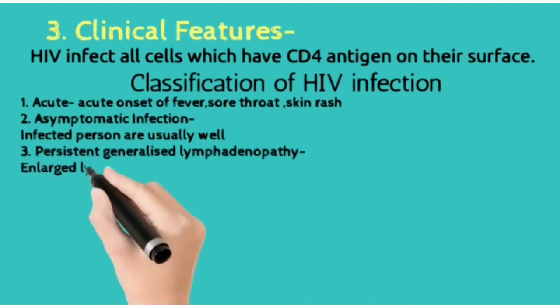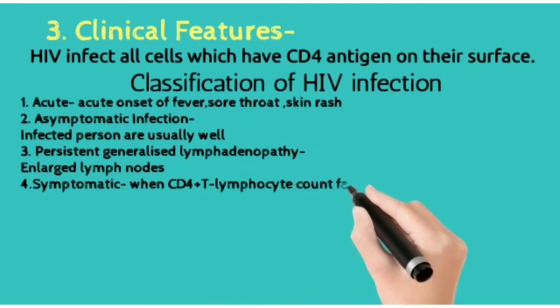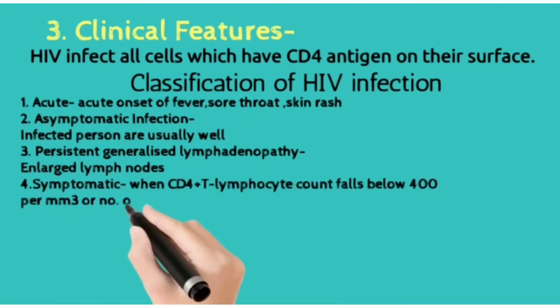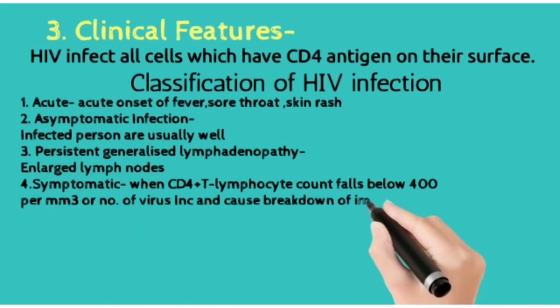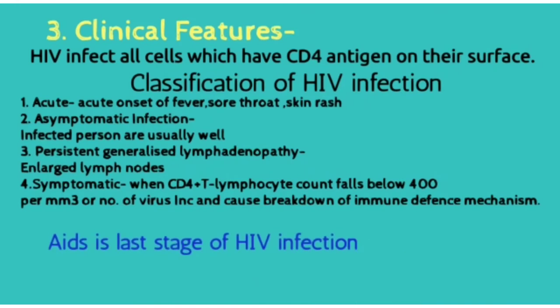Second is asymptomatic, where the infected person seems usually well. Third is persistent generalized lymphadenopathy, where there are enlarged lymph nodes. Fourth is symptomatic, and AIDS is the last stage of HIV infection. In the symptomatic stage, the CD4+ T4 lymphocyte count falls below 400 per mm³.